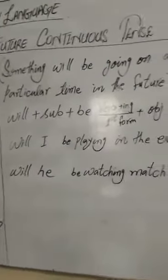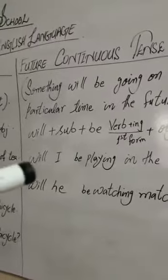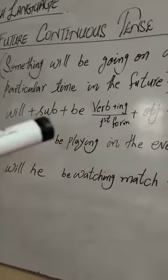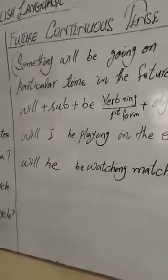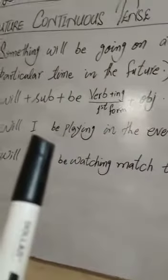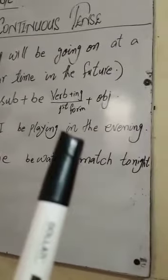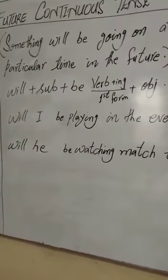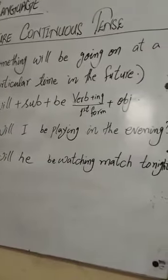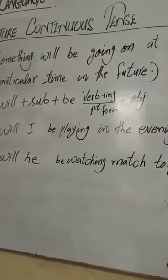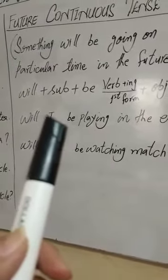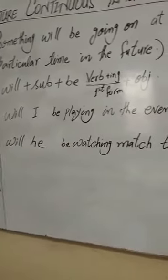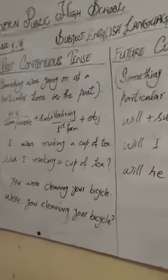Future continuous sentence میں ایک تھوڑی سی changing ہے: will اور be کے درمیان میں اپنا subject لانا ہے — یعنی will پہلے آئے گا، پھر subject، پھر be، پھر باقی sentence اسی طرح۔ Sentence بنا: Will I be playing in the evening? کیا میں شام کو کھیل رہا/رہی ہوں گا/گی؟ Will he be watching match tonight? یہ تھوڑی سی changing ہے: will + subject + be۔